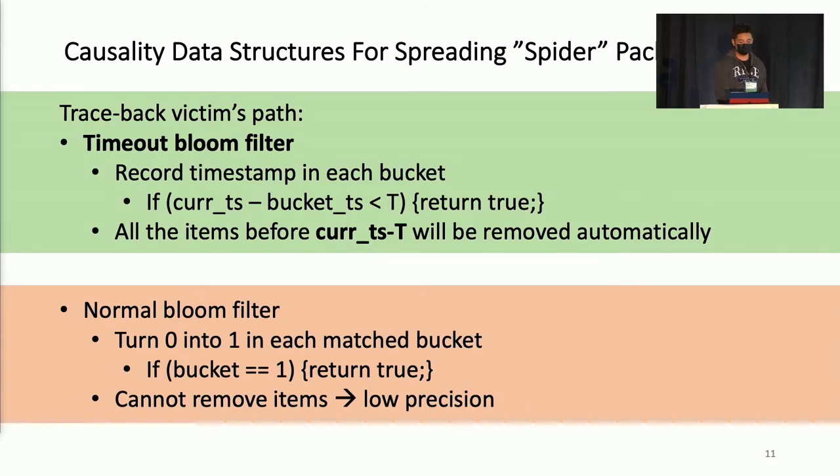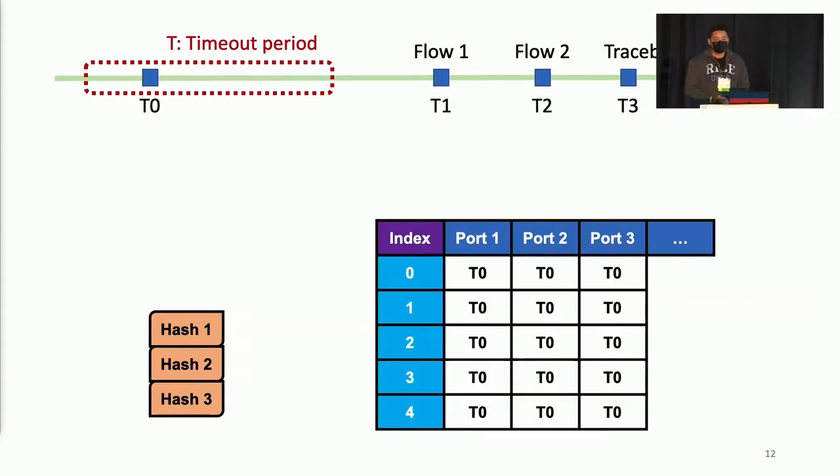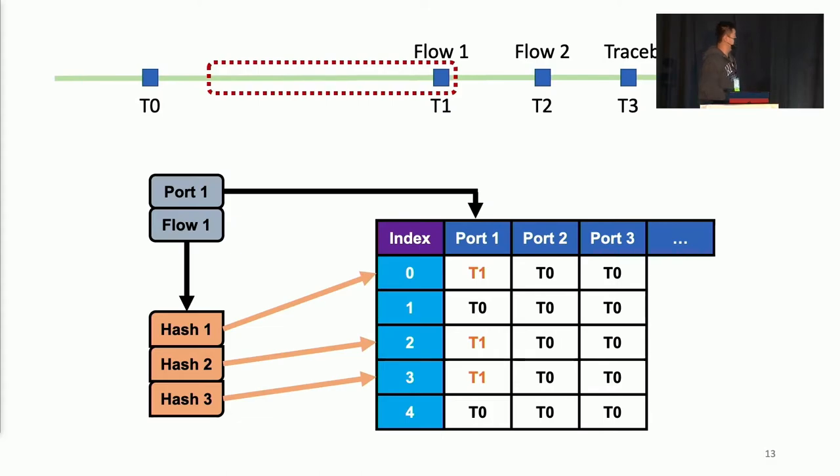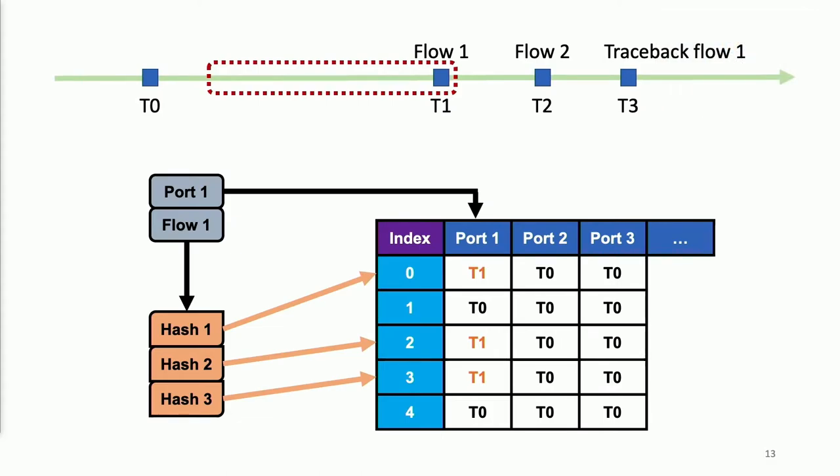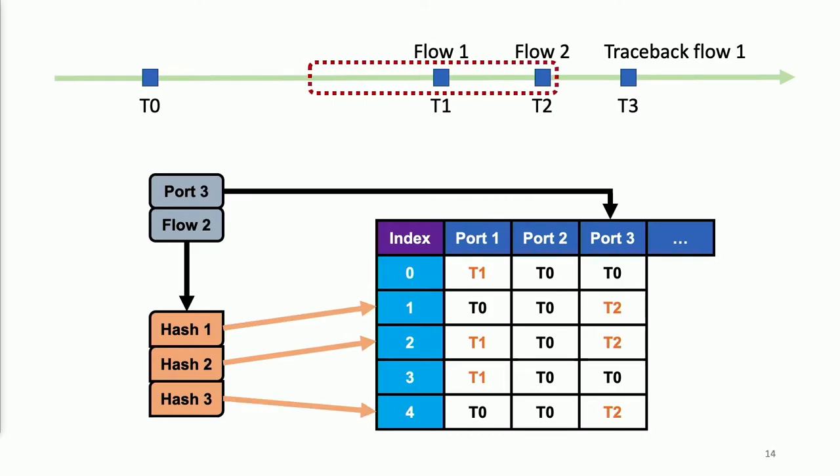To elaborate on how this timeout bloom filter works, we give a very simple example. In this example, at the very beginning, all the buckets are T0, which is timestamp 0. The red rectangular represents the timeout interval. At time T1, flow 1 arrives at port 1. You can see the corresponding buckets are changing into T1. Similarly, the flow 2 coming from port 3 will change its corresponding bucket into T2.